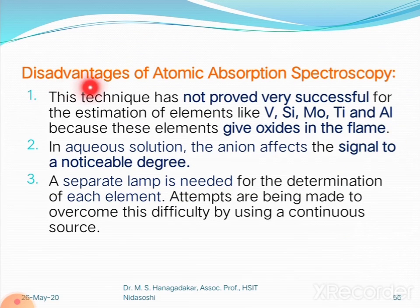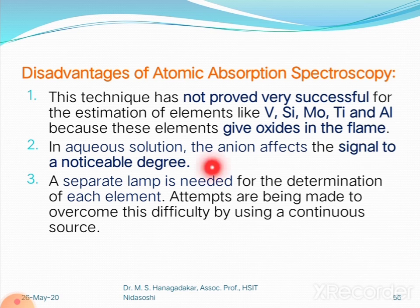Disadvantages of atomic absorption spectroscopy: First, the technique has not proved very successful for elements like vanadium, silicon, molybdenum, titanium, and aluminum, because these elements form oxides that interfere with the analysis, making accurate results difficult. Second, in aqueous solutions, anions can affect the signal to a noticeable degree. Third, a separate hollow cathode lamp is needed for each element; attempts are being made to use a continuously constant source, but the technology still needs improvement.